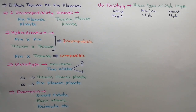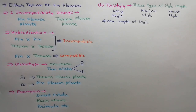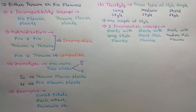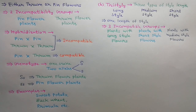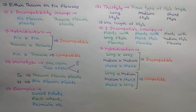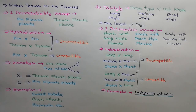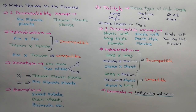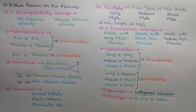In tristyly, styles show three types of length: long, medium, and short. A plant either has only long, only medium, or only short style flowers, giving three incompatibility groups. Hybridization between long × long, medium × medium, or short × short does not produce seeds — incompatible. Hybridization between long × medium, medium × short, or short × long produces seeds — compatible. Tristyly is found in Lythrum salicaria and is controlled by two genes, S and M.